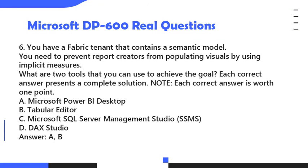Question 6. You have a Fabric tenant that contains a semantic model. You need to prevent report creators from populating visuals by using implicit measures. What are two tools that you can use to achieve the goal? Each correct answer presents a complete solution. A. Microsoft Power BI Desktop. B. Tabular Editor. C. Microsoft SQL Server Management Studio (SSMS). D. DAX Studio. Answer: A and B.